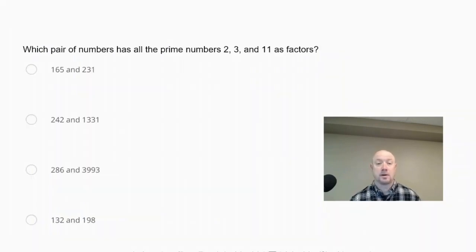Which pair of numbers has all the prime numbers 2, 3, and 11 as factors? Is it 165 and 231? Is it 242 and 1,331? 286 and 3,993? Or is it 132 and 198? All right, so what I'm going to do is I'm going to use divisibility rules for checking to see if these prime numbers are factors.